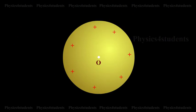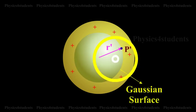Case 3: At a point inside the shell, consider a point P' inside the shell at a distance r' from the center of the shell. Let us construct a Gaussian surface with radius r'.